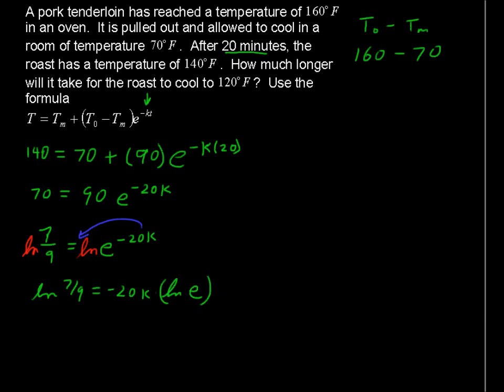Equals negative 20k multiplied by the natural log of E. This natural log of E is just 1, so now we can just divide everything by negative 20. So, in the end, you have the natural log of 7 over 9 divided by negative 20.